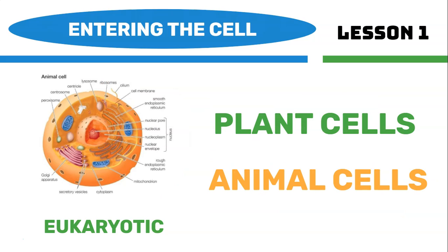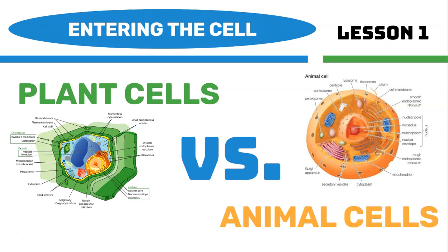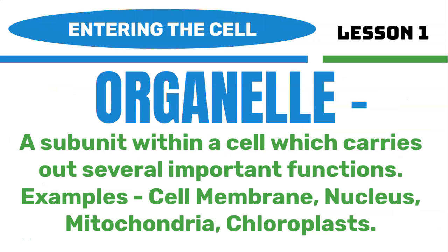Within eukaryotic cells, we have plant cells and animal cells — these are the two main types you'll need to know for your science or biology class. Now let's look at plant cells versus animal cells. Many of the differences between plant cells and animal cells exist because of their organelles. Plant cells and animal cells have different organelles — most are very similar, but some are unique to each type.